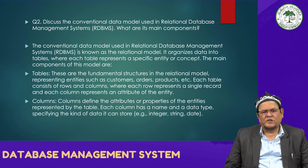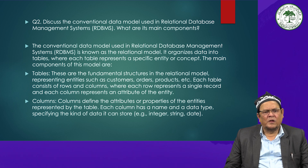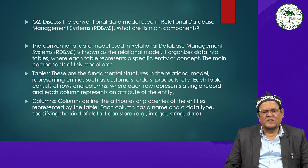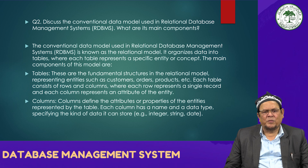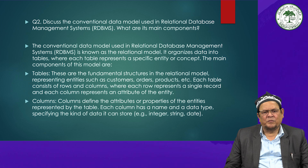The conventional data model used in relational database management systems is known as the relational model. It organizes data into tables, where each table represents a specific entity or concept. The main components are: tables, which are the fundamental structures representing entities such as customers, orders, and products. Each table consists of rows and columns, where each row represents a single record and each column represents an attribute of the entity. Columns define the attributes or properties of the entities, and each column has a name and a data type.